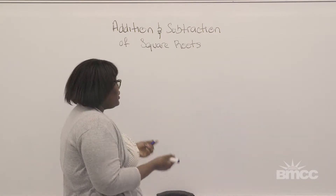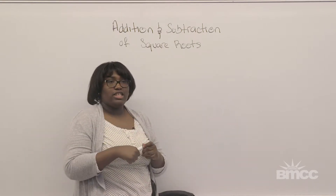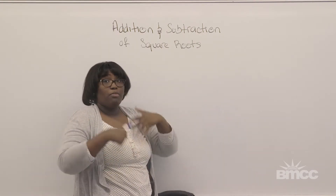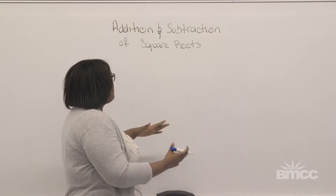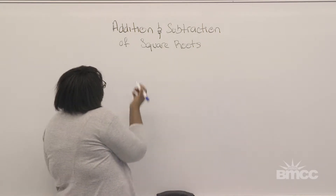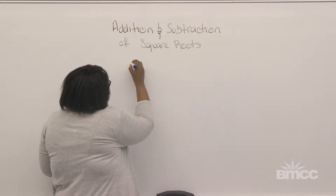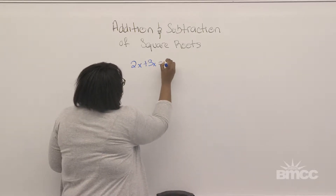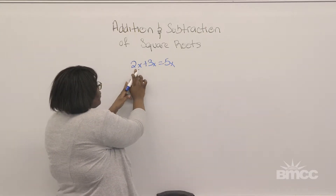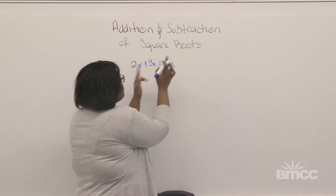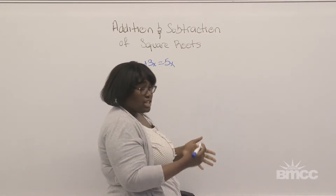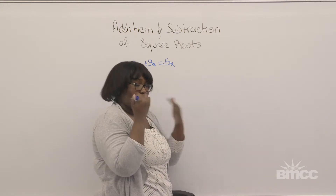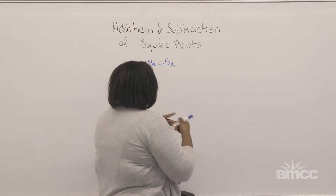When we do addition and subtraction of square roots, it is similar to when we do addition and subtraction of polynomials. So if you remember, if you were to have 2x plus 3x, that would give you 5x. You add the coefficients and keep the x. The same concept applies when you do addition and subtraction of radicals, square roots.